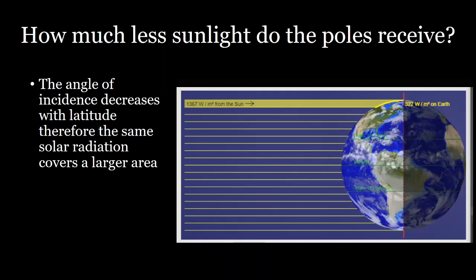Hello everyone, welcome back. So where we left off was talking about why the sky appears blue and why the sunset looks reddish colored. But we're going to continue on talking about how much less sunlight do the poles receive.